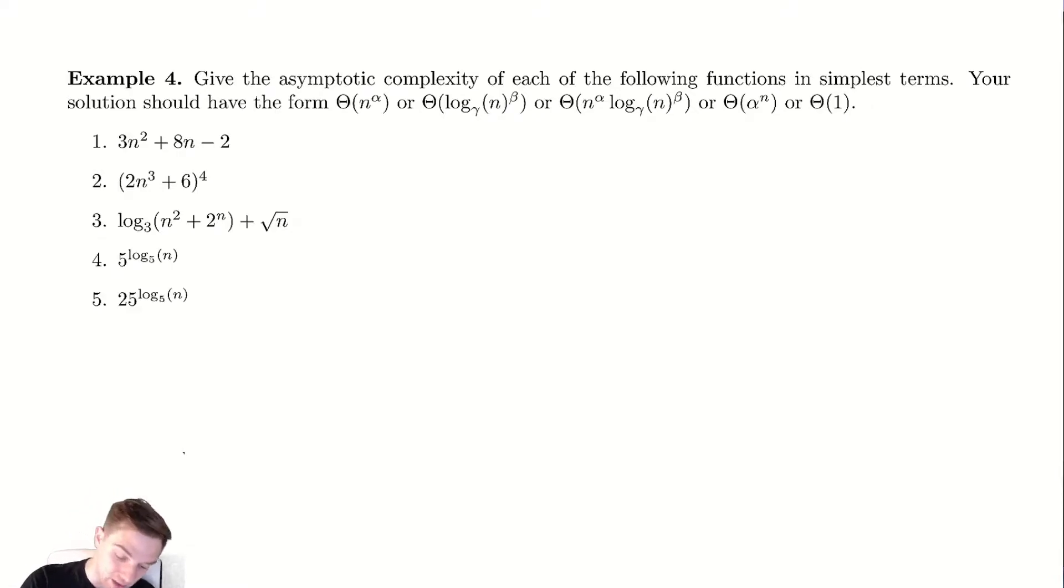First what we have here is 3n² plus 8n minus 2, that's some polynomial. You want to know roughly what is the complexity. In particular we have a certain set of allowable answers: n to a power, log base something of n to a power, n to a power times log base something of n to a power, exponential and constant. That's all we will see.